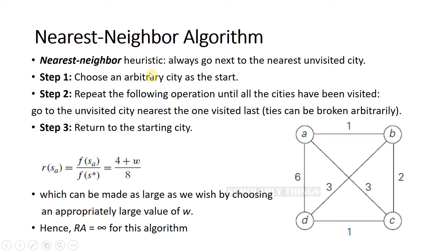Nearest neighbor algorithm. Nearest neighbor heuristic is always go next to the nearest unvisited city. Step one is choose an arbitrary city as the start. Step two, repeat the following operation until all the cities have been visited: go to the unvisited city nearest to the one visited last. Step three, return to the starting city.